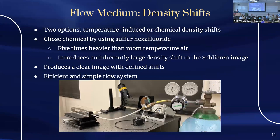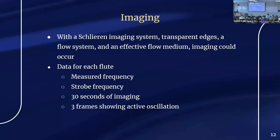To induce the density shifts that Schlieren imaging would detect, we had two options: changing the temperature of the flow, or using something at a different chemical density. We went the chemical route using sulfur hexafluoride (SF6). This gas is five times heavier than room-temperature air, producing a really sharp image because it introduces a very large density shift. It was also the most efficient and simple system for an experiment focused primarily on imaging — just a tank with a hose going into the flute.